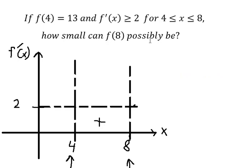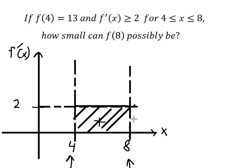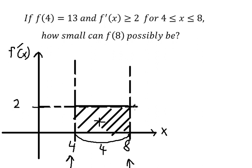We want to find the smallest possible value of f of number eight, which means we need to find the lowest possible area. So the derivative f prime of s should equal number two — the minimum allowed value. We calculate this area: the width is eight minus four, which is four, multiplied by two, giving us eight.